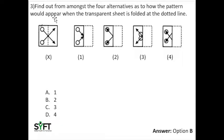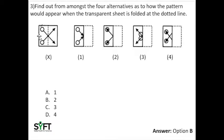Find out from amongst the four alternatives how the pattern would appear when the transparent sheet is folded at the dotted line. The part which is not folded — the left side — would remain as it is, so we shouldn't reimagine the circles. The only thing which would change is the right part, which would be folded above the left part. So the circles remain in their own positions, whereas the arrows would move towards the left side of the paper.